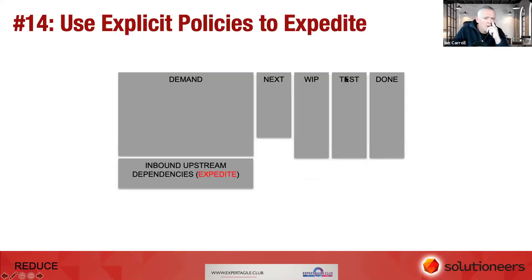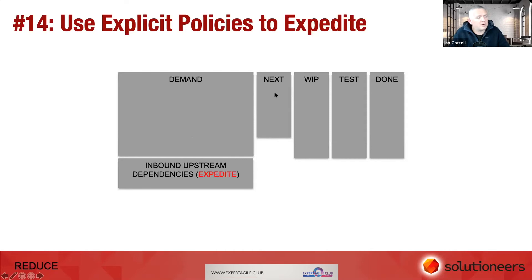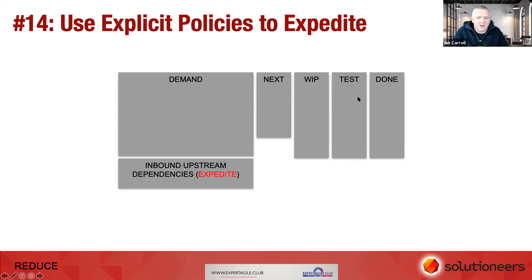The next technique: use explicit policies to expedite. On a kanban board we've got a load of stuff in the backlog, and we decide what to pull into the next column or next sprint. Instead of just adding things generally, if you've got an inbound upstream dependency, this is a bit like the fast pass at Disneyland — it gets you to the front of the queue. It doesn't immediately mean you'll get prioritized and have your work started; it just means you get to the front of the queue to have the conversation.